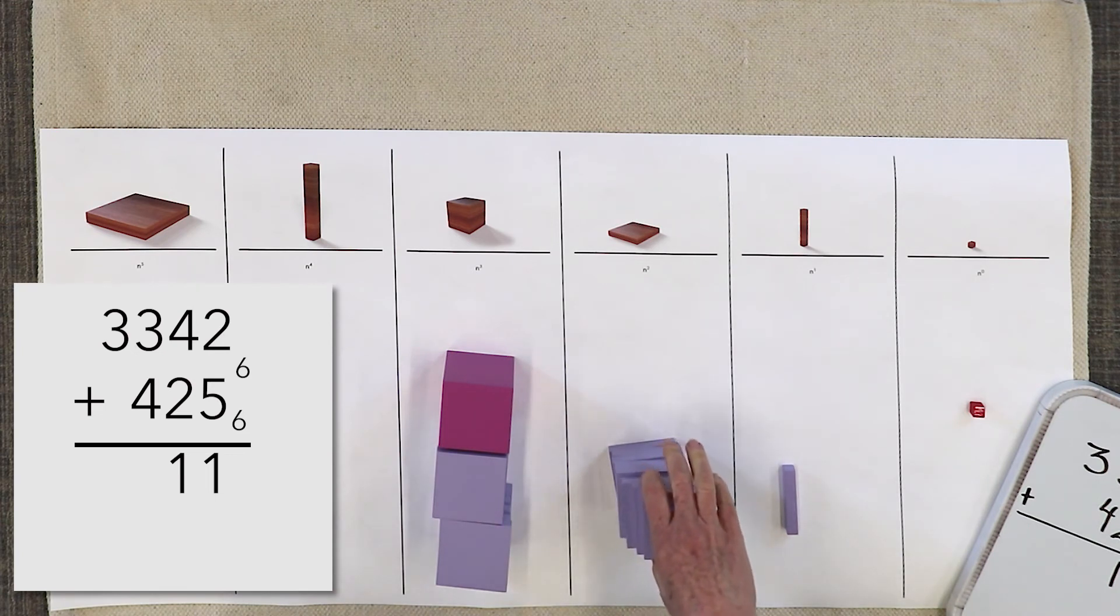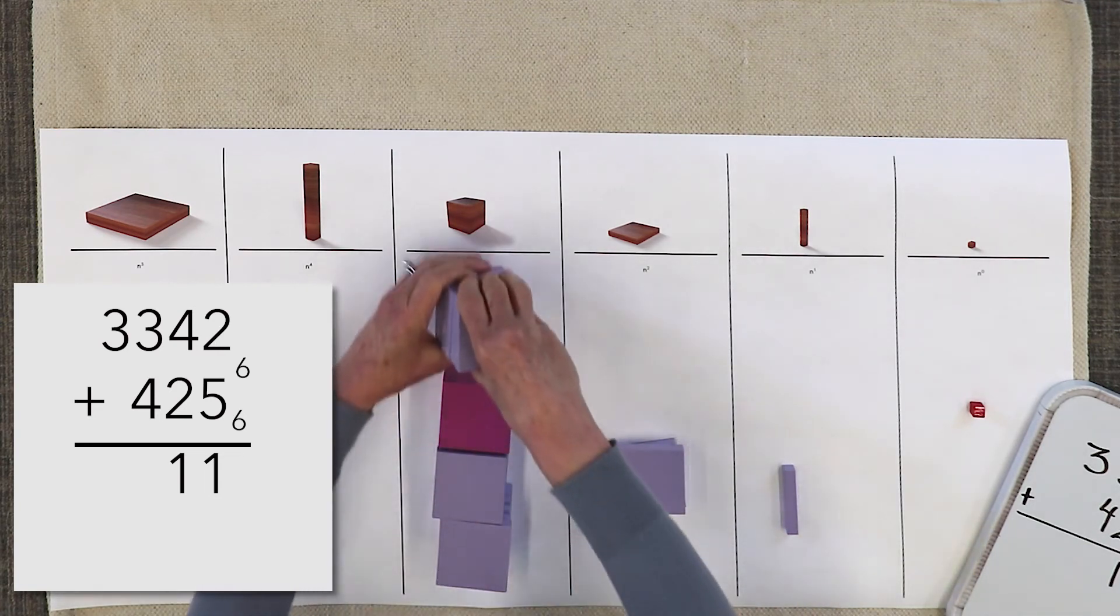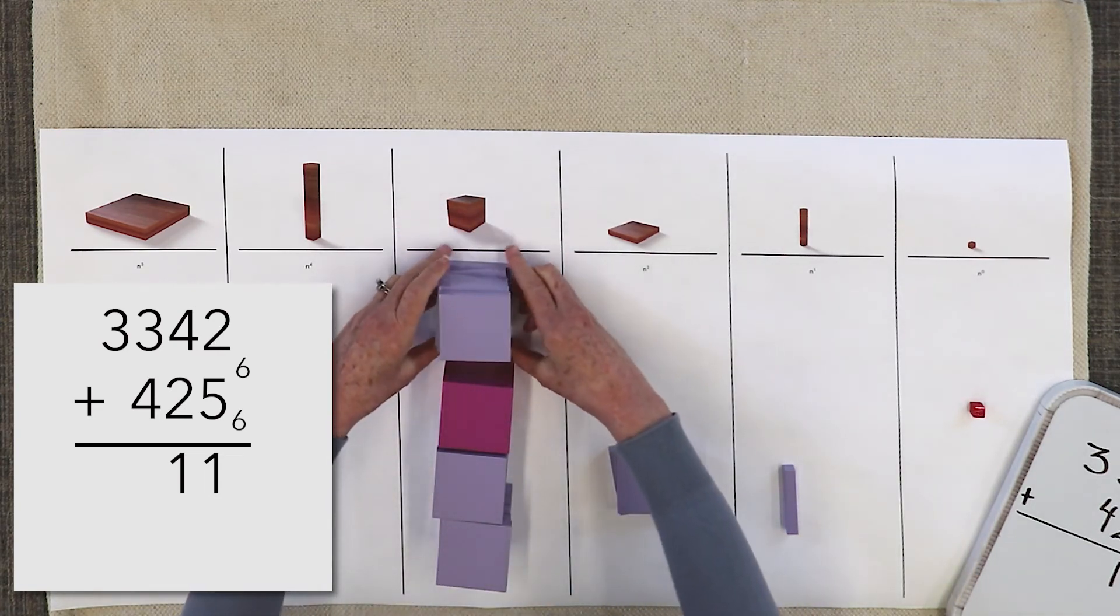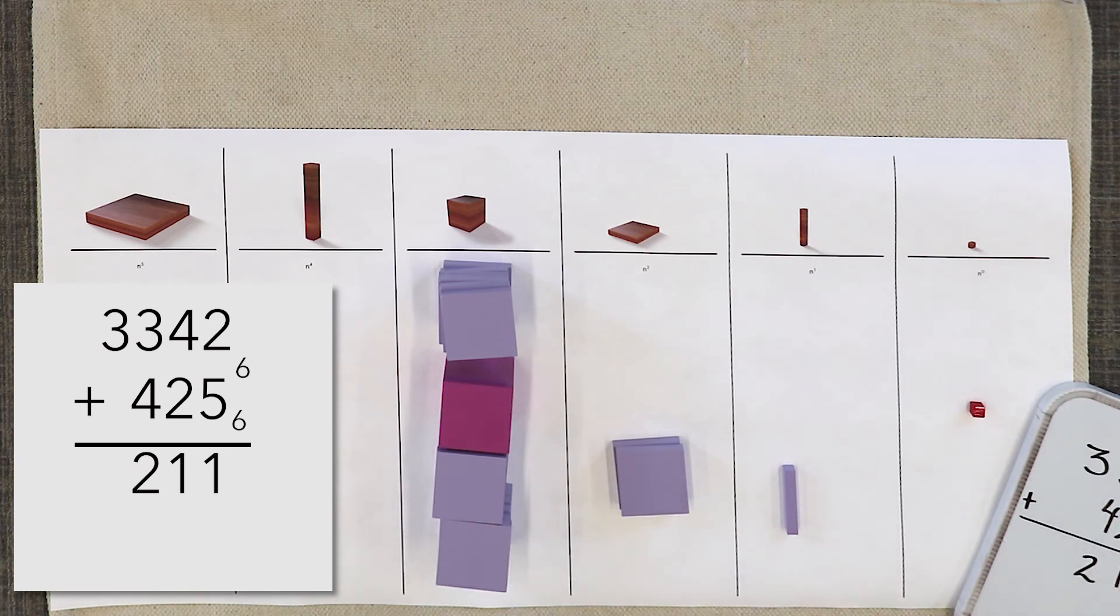One, two, three, four, five, six. Exchange for the cube. That means I have two in my flats place and one, two, three, four in my cubes place.